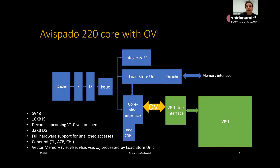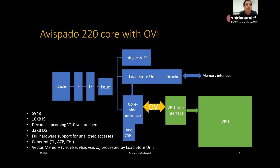Just to put this in context, this is showing the high-level view of our RISC-V core, the Avispado 220. There's a standard iCache, fetch-decode-issue, integer floating point, and a load store unit. The load store unit does the vector loads and vector stores, handles masking, vector load mask, and also handles gathers and scatters — indexed vector memory accesses. And then there's this box called the core site interface that speaks this OVI specification that Alberto will describe.